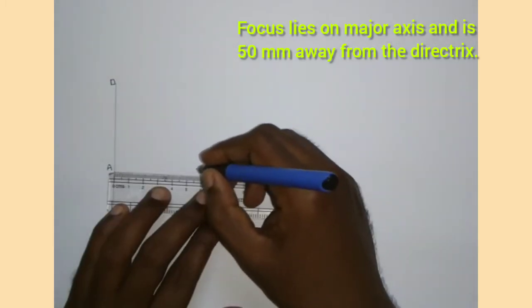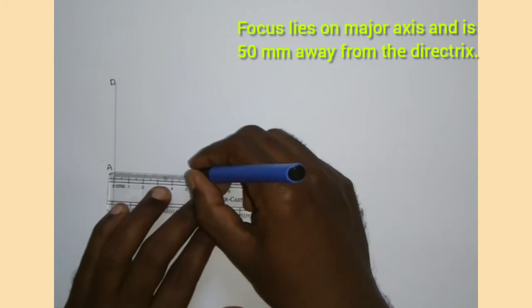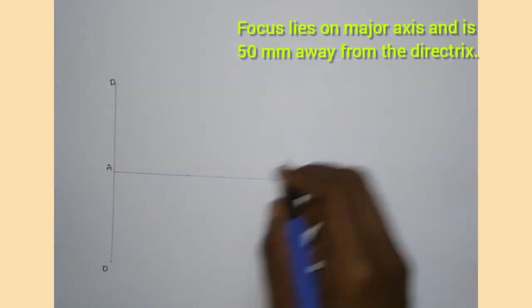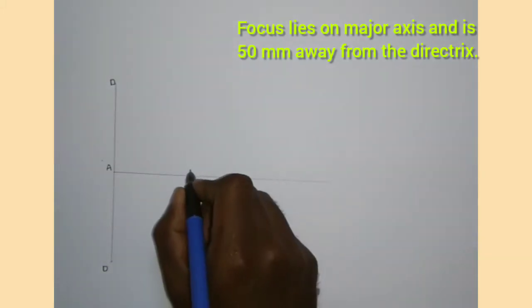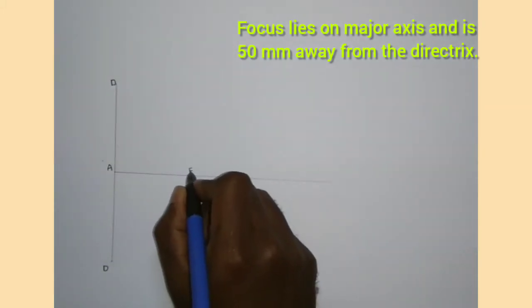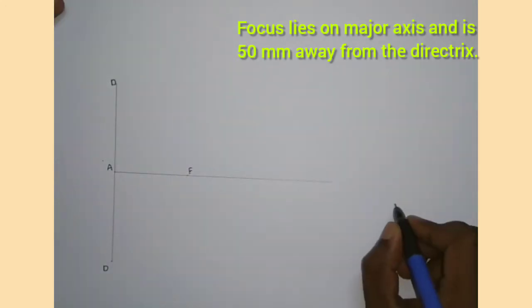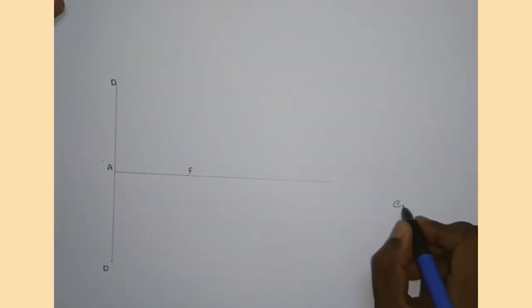We can call it the major axis and the focus lies on the major axis. It is given that the focus is 50 mm away from the directrix. So we can mark F as the focus, that is 50 mm away from the directrix.